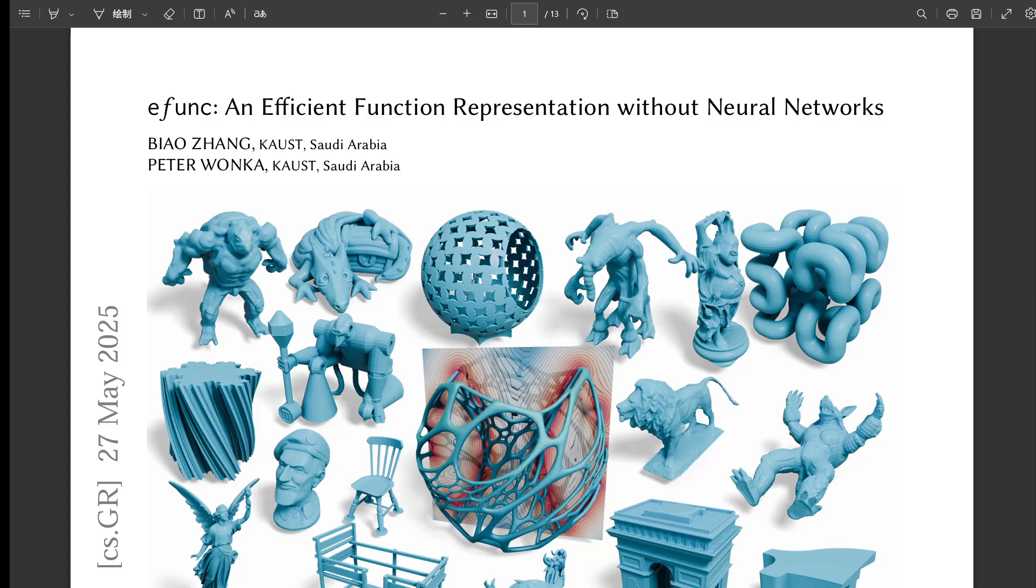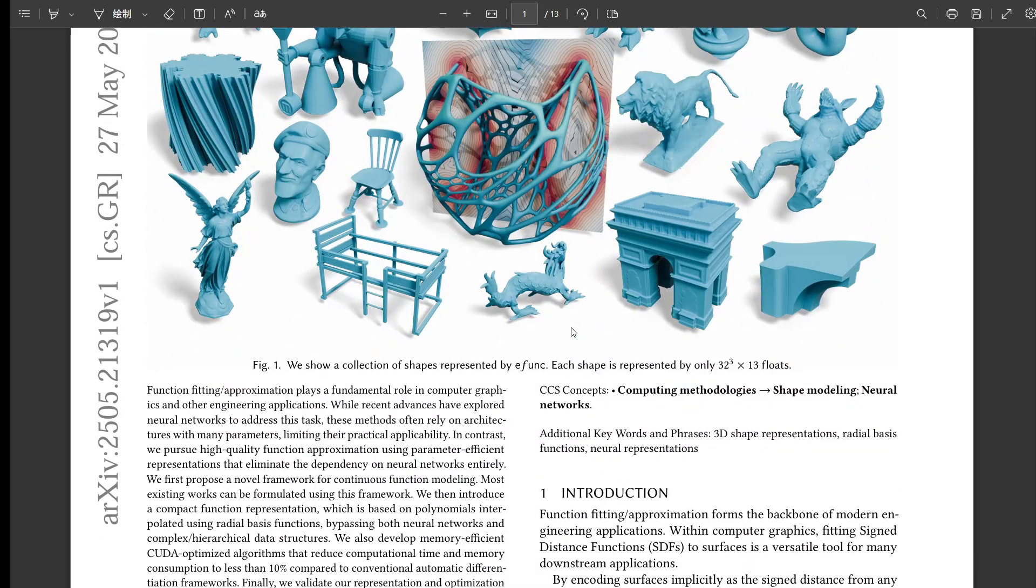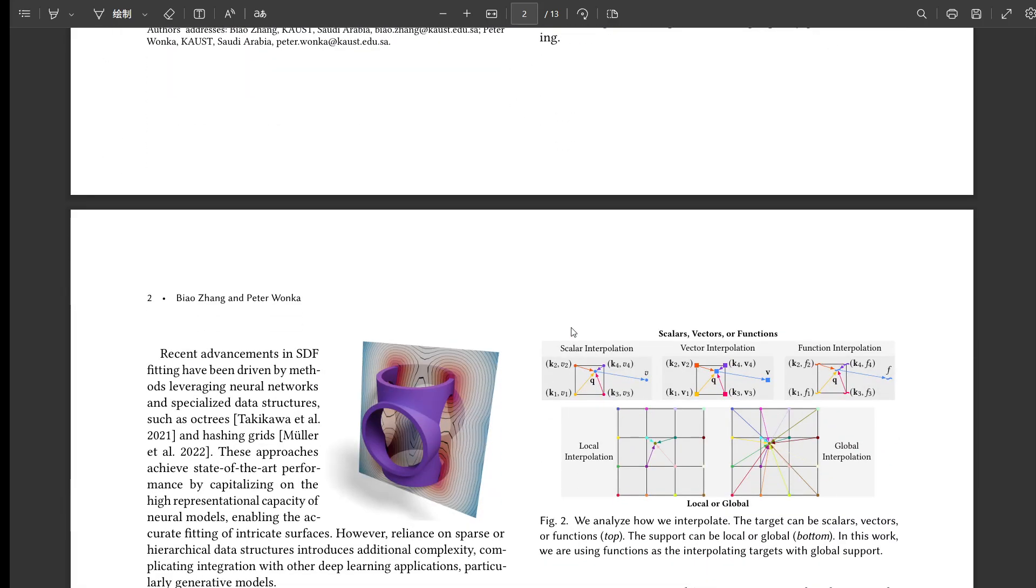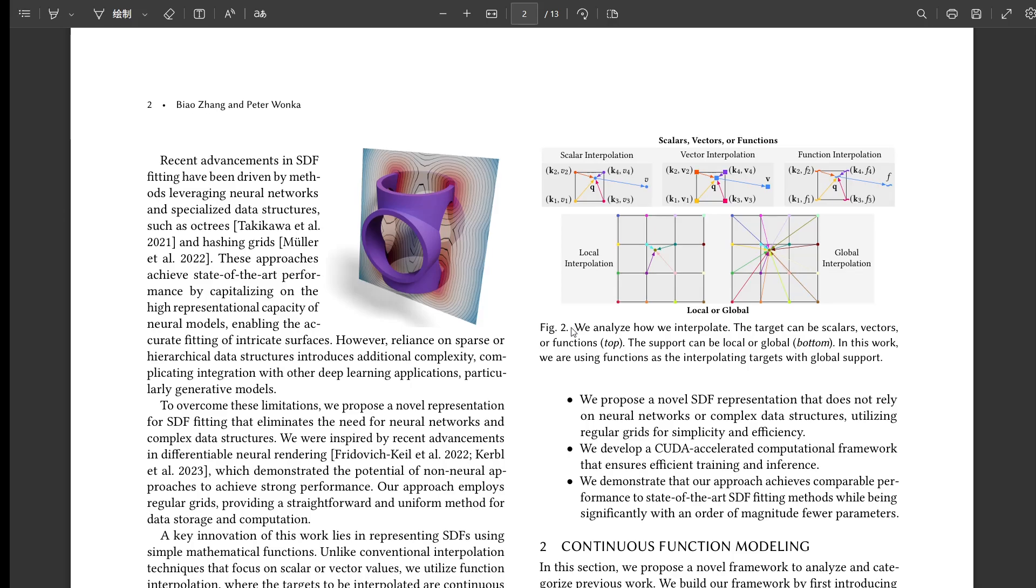Exactly. And the paper we're diving into introduces this method called E-FUNC. What's really different about it, its core mission, is aiming for that high-quality representation without relying on huge neural networks or those complex data structures that a lot of the top methods use right now. It's a different approach. So our main source today is the paper E-FUNC, an efficient function representation without neural networks by Biao Zhang and Peter Wonka from KAUST. It's up on arXiv. Plus some notes we have. Our mission: unpack the academic thinking, the innovations behind E-FUNC. We want to understand not just what it is, but how it tackles the problem differently and why that really matters.